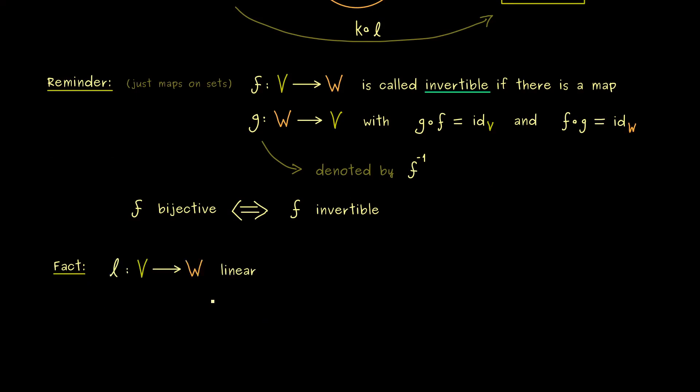More concretely, this means if we take a linear map L from V to W, which is also bijective. Which now we know means that we have an inverse map on the set level. Then the conclusion is that this inverse map is also linear.